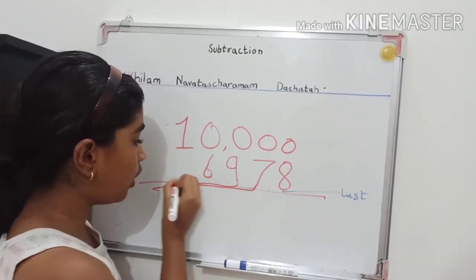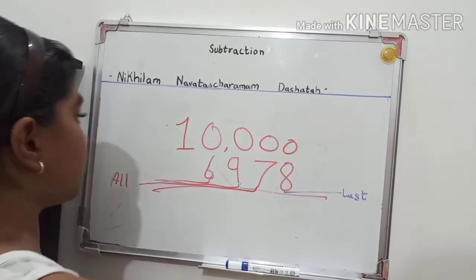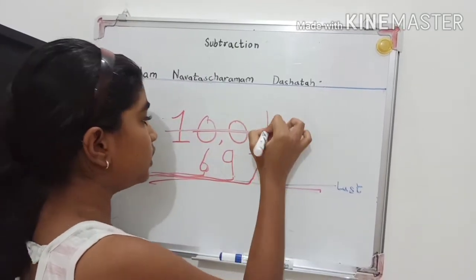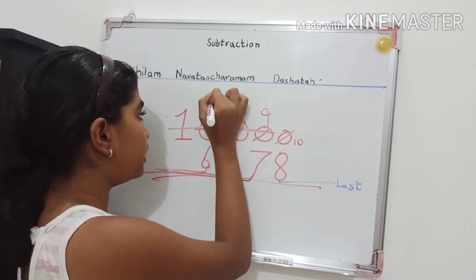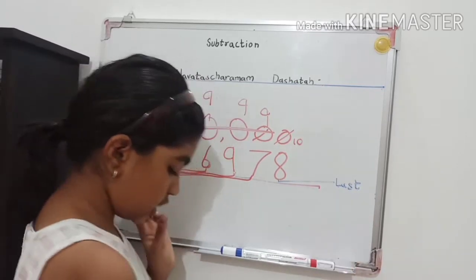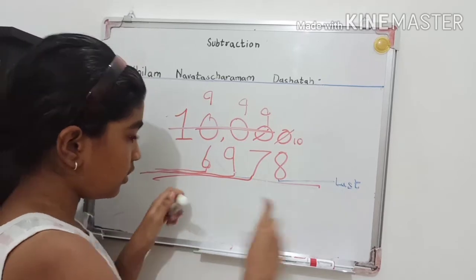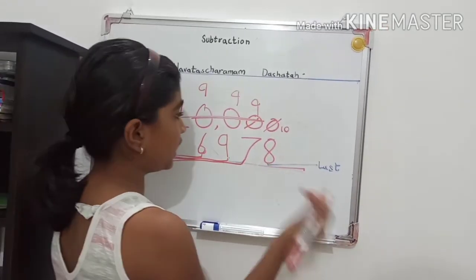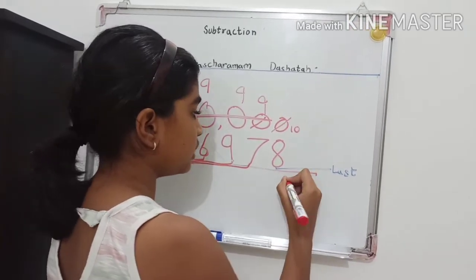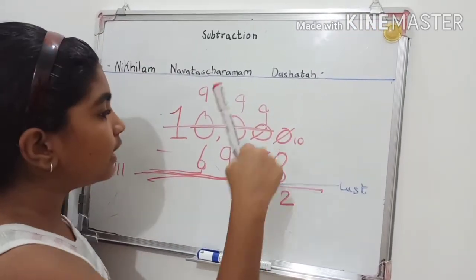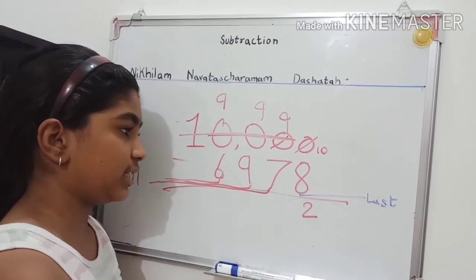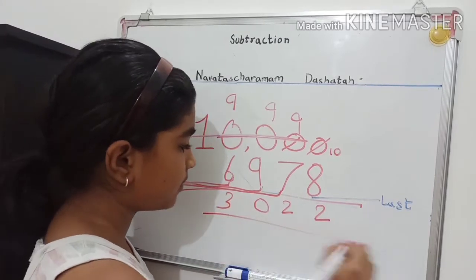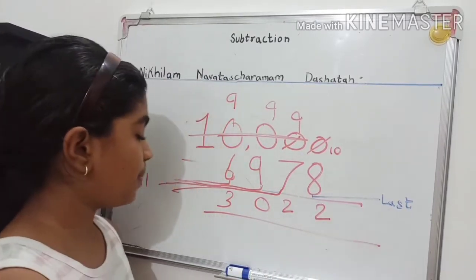Because of the 'all' digits, we have to convert: the last zero becomes 10, and the rest of the zeros become 9. Now let's find the answer: 10 minus 8 is 2, 9 minus 7 is 2, 9 minus 9 is 0, and 9 minus 6 is 3. So your answer is 3022.